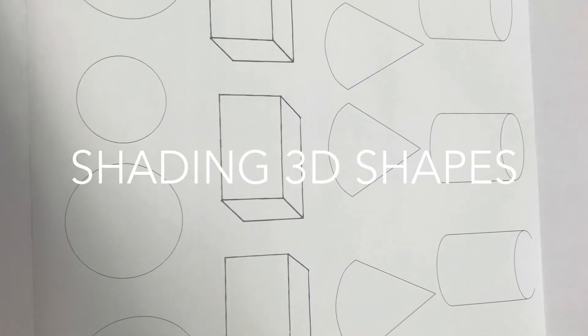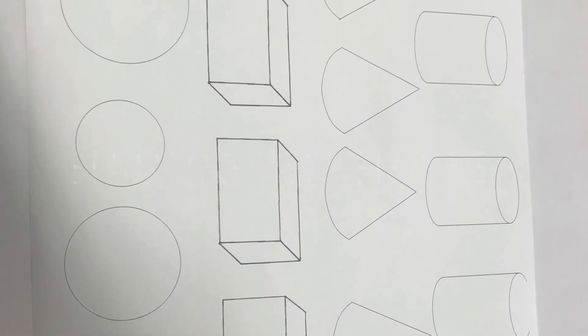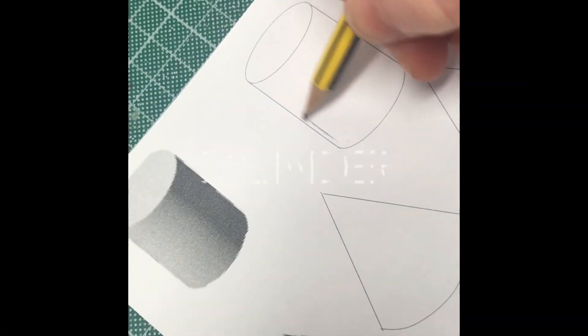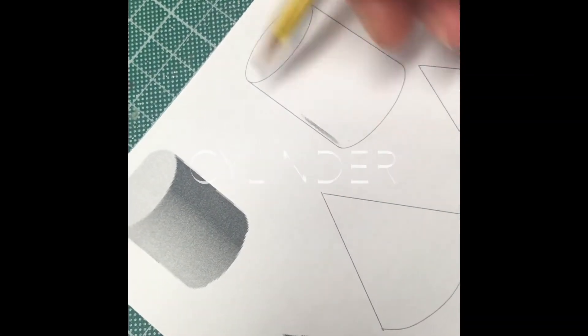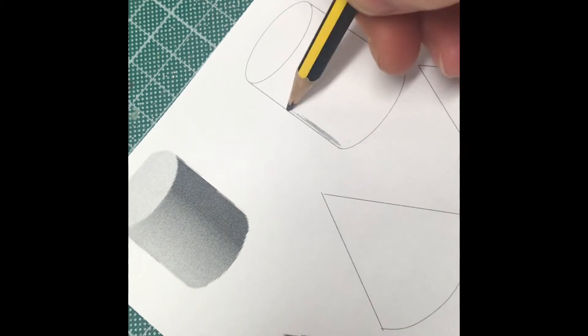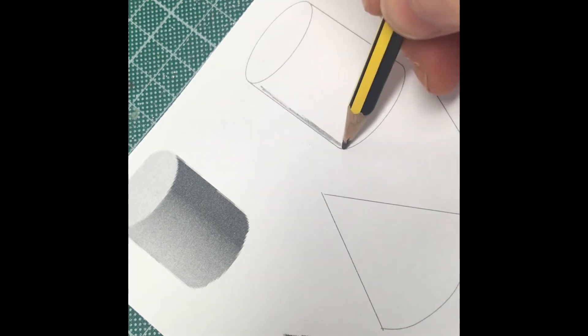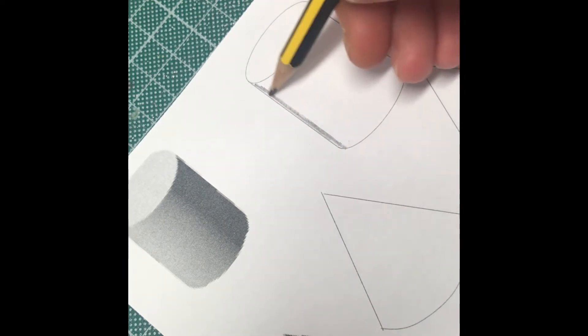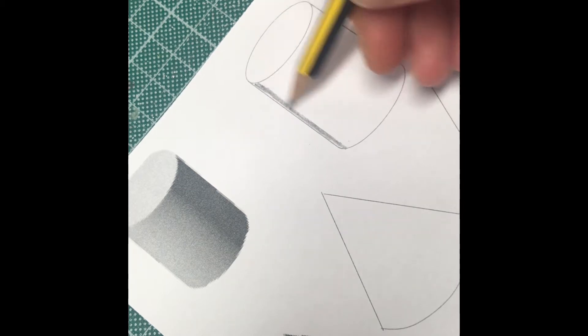In this video I'm going to be shading the cylinder. You need to decide which side is going to be the darkest and which side is going to be the lightest. Start with your darkest side and gradually shade from dark to light. Try and keep your pencil in the one direction.